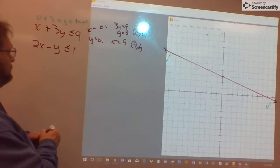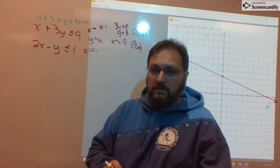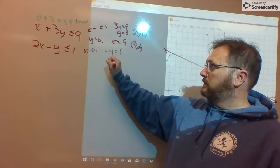If x is 0, I'm left with the opposite of y equals 1 or y equals negative 1. Plot the point 0, negative 1.